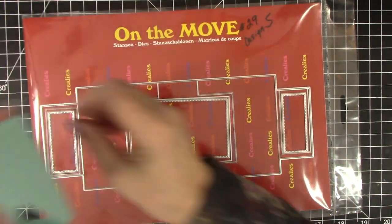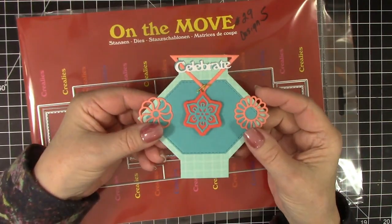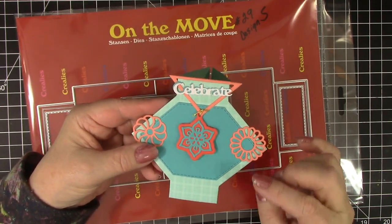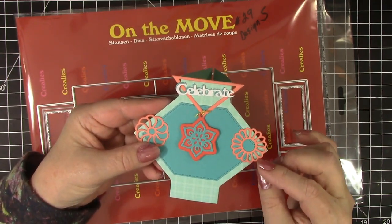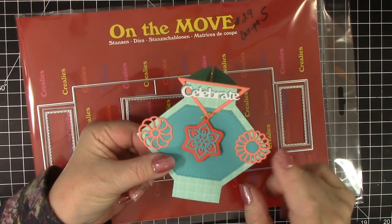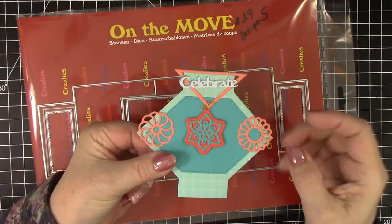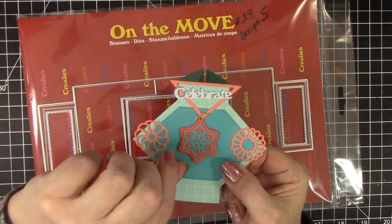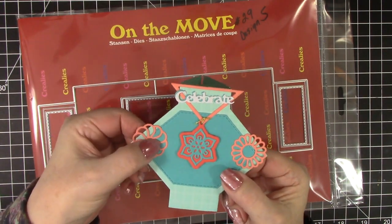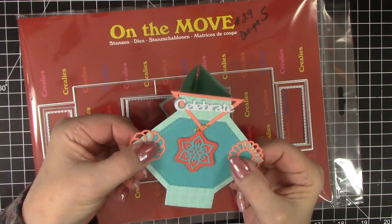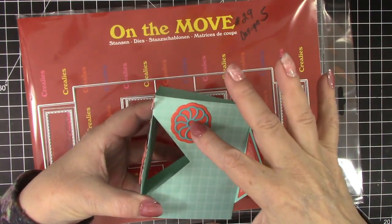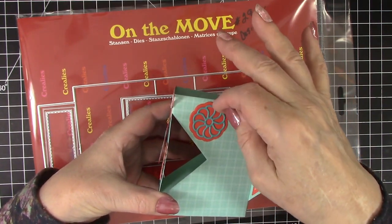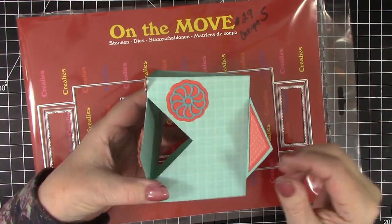Here is another Stand Up Fun Fold card I made. This time it was with the number 27 Design S On The Move die set and some new charm dies. Just look at how fun those are. There is a layer you can put them on to create a hanging charm or you can just use them as decorations like I did there. I like to decorate the side and that's another one of those charm dies and I just snipped off the little hanging piece.